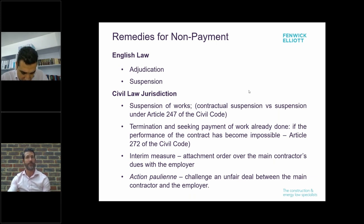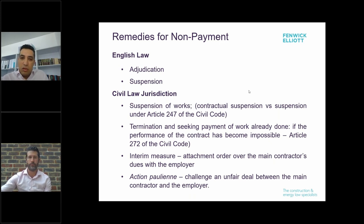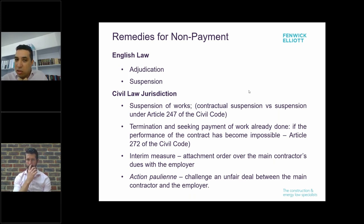Contractors in civil law jurisdictions therefore have to seek alternative self-help remedies to enforce payment. Suspension is a very strong and effective tool in case of non-payment, but we always advise clients to be careful exercising the right of suspension because the consequences of suspending construction projects can be very serious. Before exercising the right of suspension, a contractor or subcontractor must make sure they do it properly in compliance with the contract and the relevant provisions of the civil code. The party exercising suspension rights should be clear as to whether this is done under the contract or under Article 247 of the civil code.